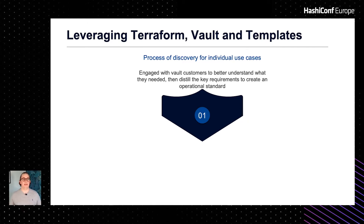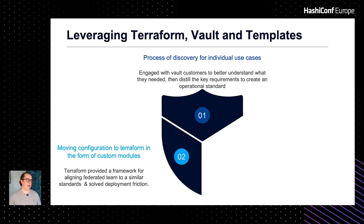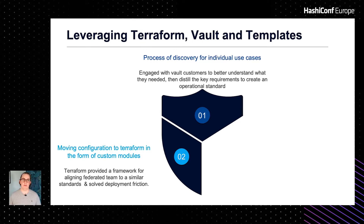We took the operational standards and codified them in the form of Terraform modules, allowing for the easy consumption of generic Vault services like KV secret engines, OIDC auth methods, and database configuration. For each of the key requirements gathered from the application owners, we were able to produce a custom Terraform module. This allowed for a pick-and-mix style approach to creating your namespace, enabling customers to pull in additional functionality after their initial namespace creation.